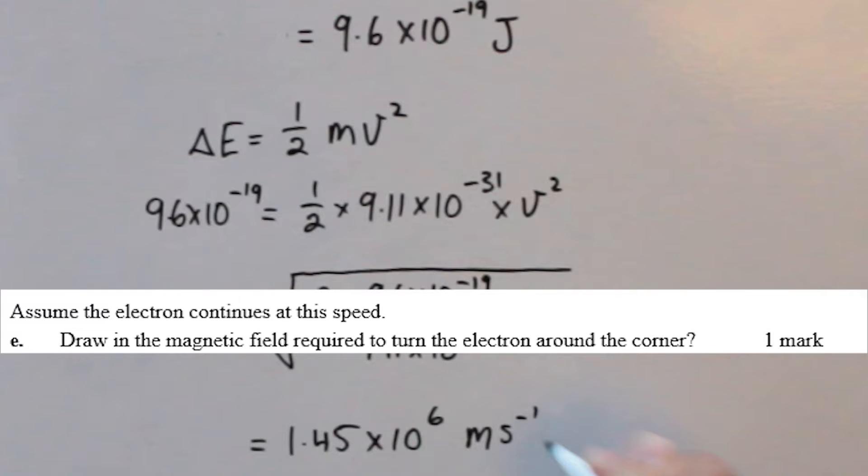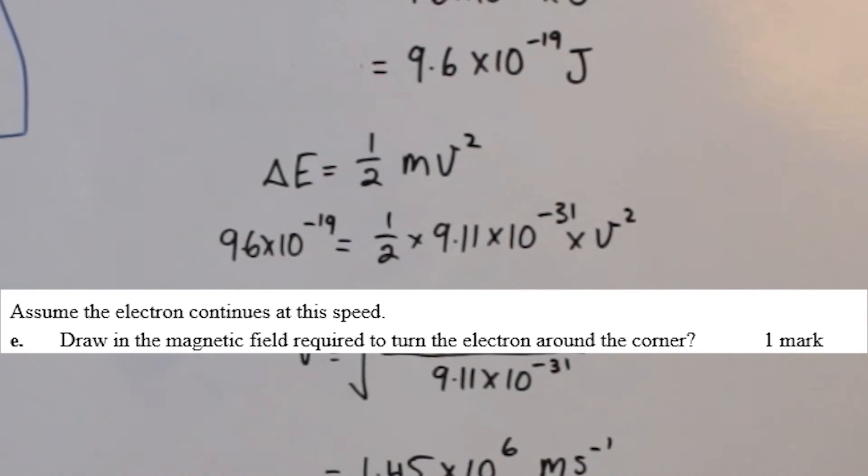Assuming that the electron continues at this speed as it travels around the corner. Draw in the magnetic field required to turn the electron around the corner. Because the electron is negatively charged, we take the current as going in the opposite direction to the way the electron is moving.